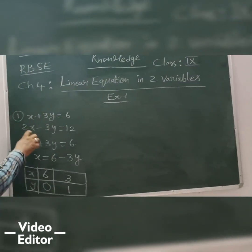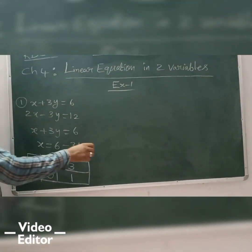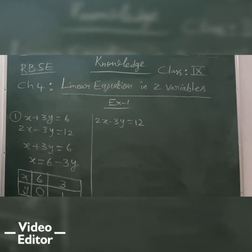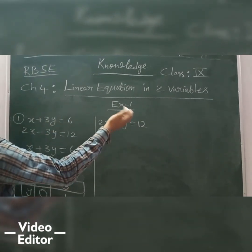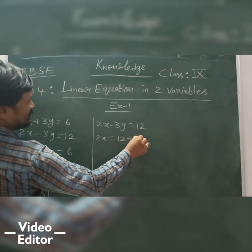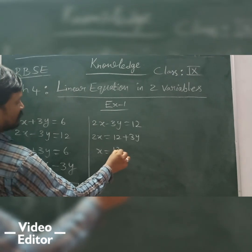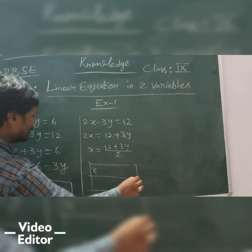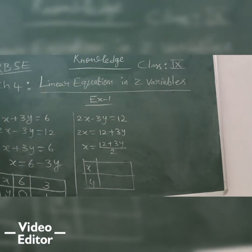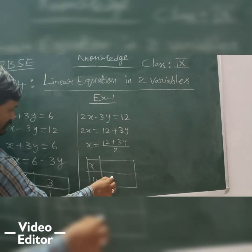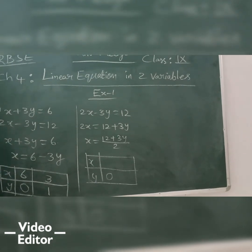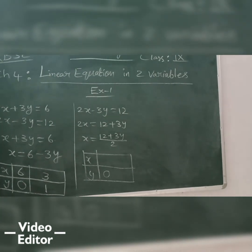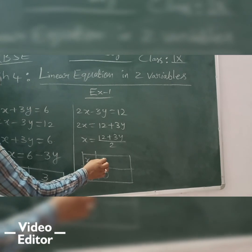Now, I will go for the second equation also. That is, 2x minus 3y is equal to 12. So, I will write here 2x minus 3y is equal to 12. So, now, what I will write is, this one is going to my side. So, 2x is equal to 12 plus 3y. x is equal to 12 plus 3y upon 2. Now, again I am going to take x and y. First I will take y is equal to 0. So, what will happen? 3 times 0 is 0. So, here what is left now? 12 upon 2. 12 upon 2 means what will you get, students? 6.